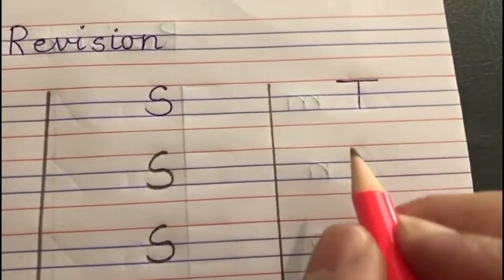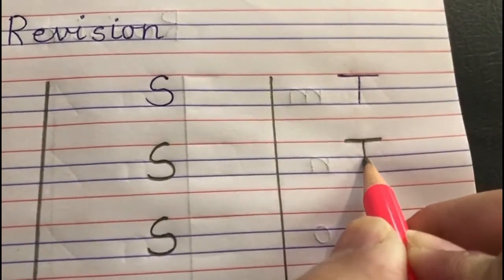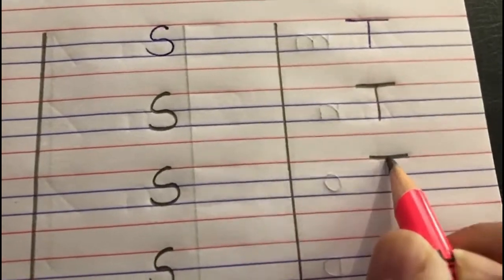And now let's write letter T. For T, you make a sleeping line and from red line to blue line and then a standing line. T. T says T. So sleeping line and then a standing line. Sleeping line and then a standing line, okay children.